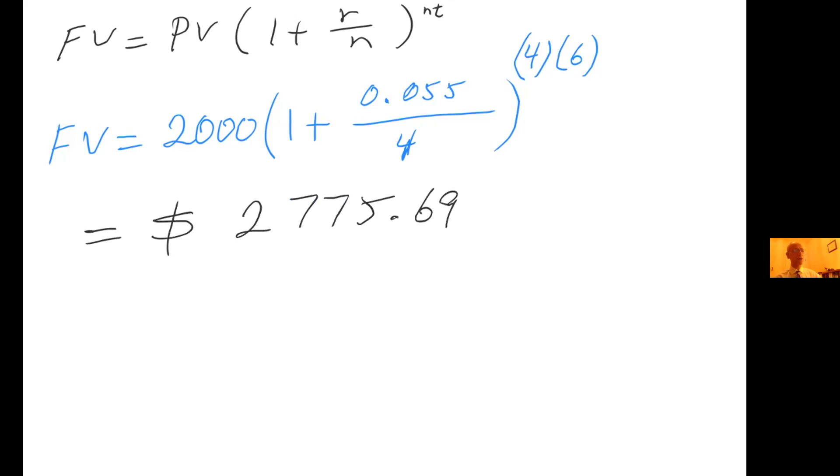This problem asks, how much money you made in interest. Of course, you had $2,000 in the beginning. So $2,775.69 minus your original $2,000. You made $775.69 in interest. Let's do another example.